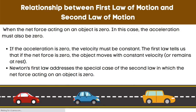What is the relationship between the first and second laws of motion? When the net force acting on an object is zero, the acceleration must also be zero. If the acceleration is zero, then the velocity must be constant. The first law tells us that if the net force is zero, the object moves with constant velocity or remains at rest. Newton's first law addresses the special case of the second law in which the net force acting on an object is zero.